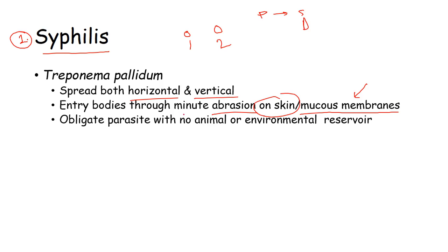STD, or sexually transmitted disease — the name suggests a lot of important features. It is transmitted via sex or during sex-related activities. The vaginal layer is lined with mucus, so mucous layers are the region where syphilis starts. Treponema pallidum is an obligate parasite with no animal or environmental reservoir — only human beings get it from one person to another.